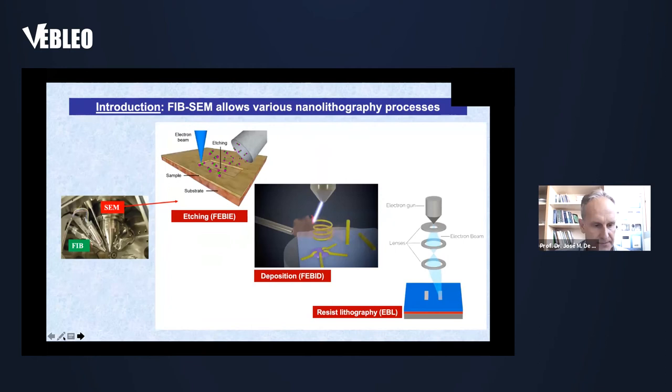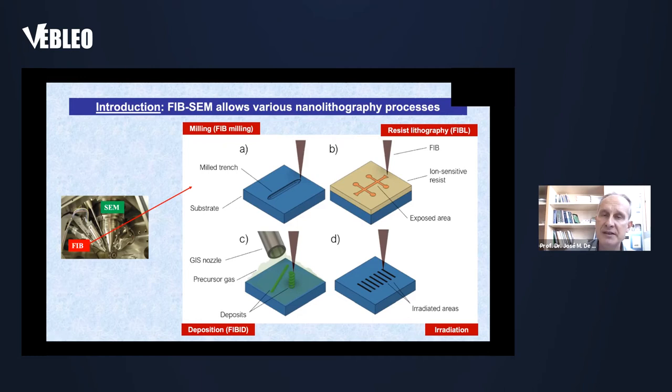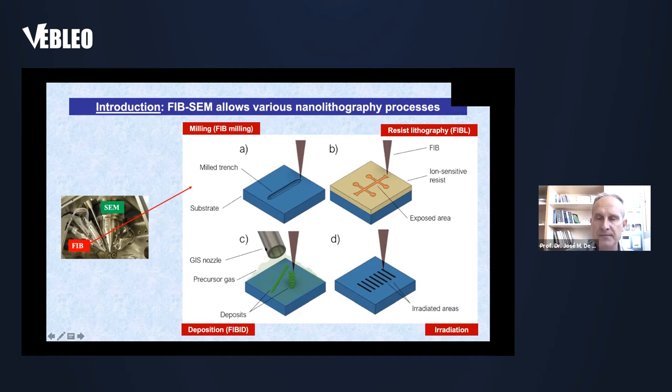Another example: I can irradiate areas of a material to change its physical properties — for example the crystallographic phase or the magnetic properties. And then the last application is the growth of nanodeposits of nanopatterned materials. For that I need a gas injection system; I insert a precursor gas that is decomposed by the focused ion beam, and I can grow in-plane structures but also out-of-plane structures. This is called focused ion beam induced deposition.